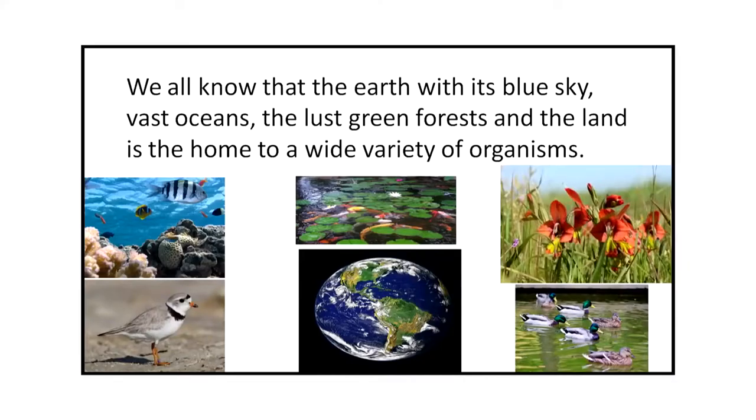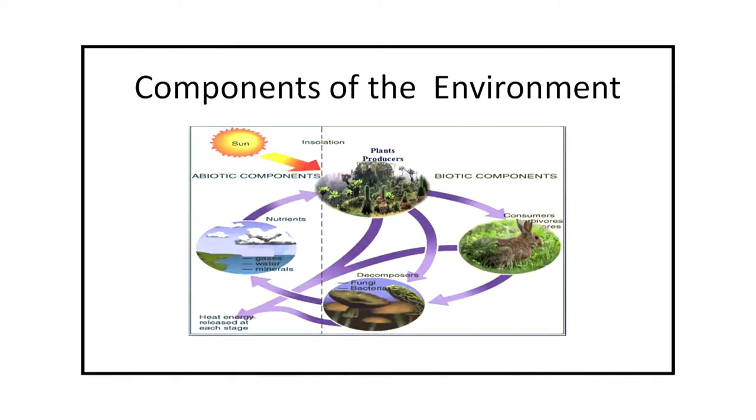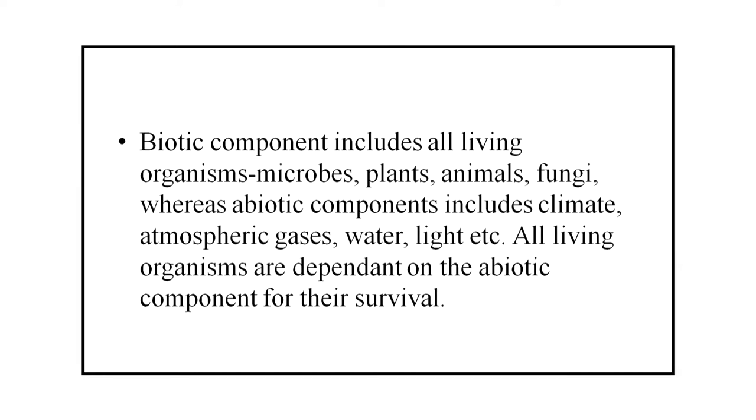Our environment consists of two major components: biotic and abiotic. We all know that the Earth, its blue sky, vast oceans and lush green forests and the land is the home to a wide variety of organisms. Now we are seeing a figure on the screen showing the components of the environment. Biotic components include all living organisms—microbes, plants, animals, fungi—whereas abiotic components include climate, atmospheric gases, water, light, etc. All living organisms are dependent on the abiotic components for their survival.